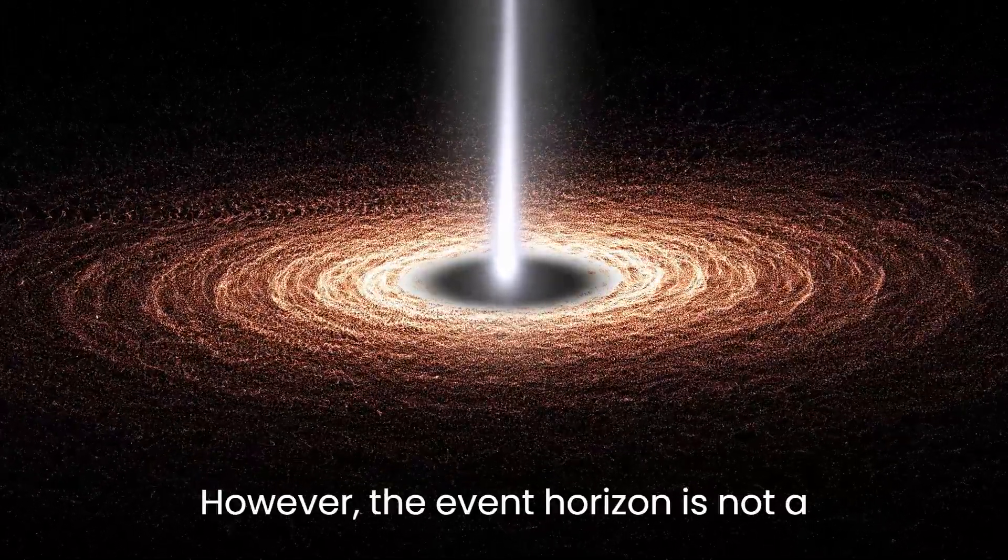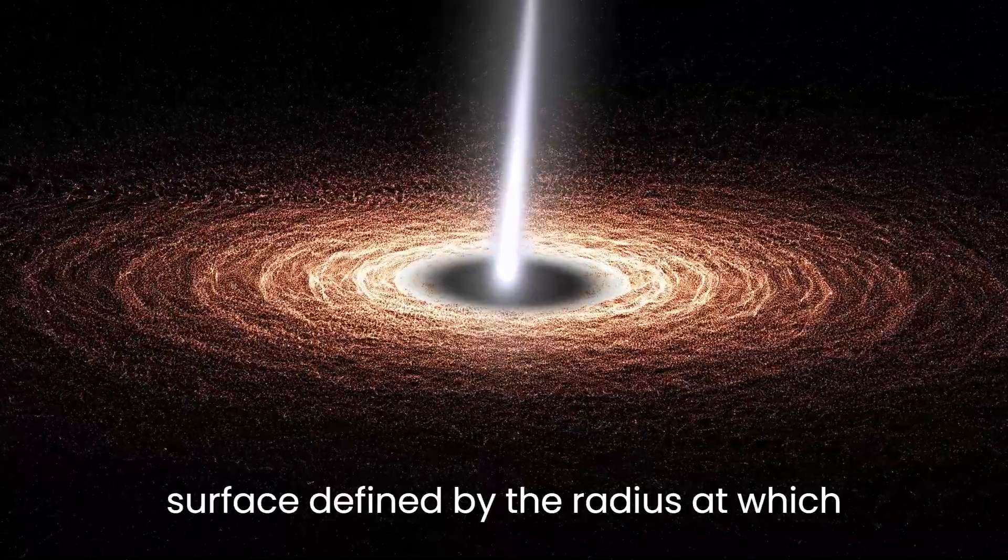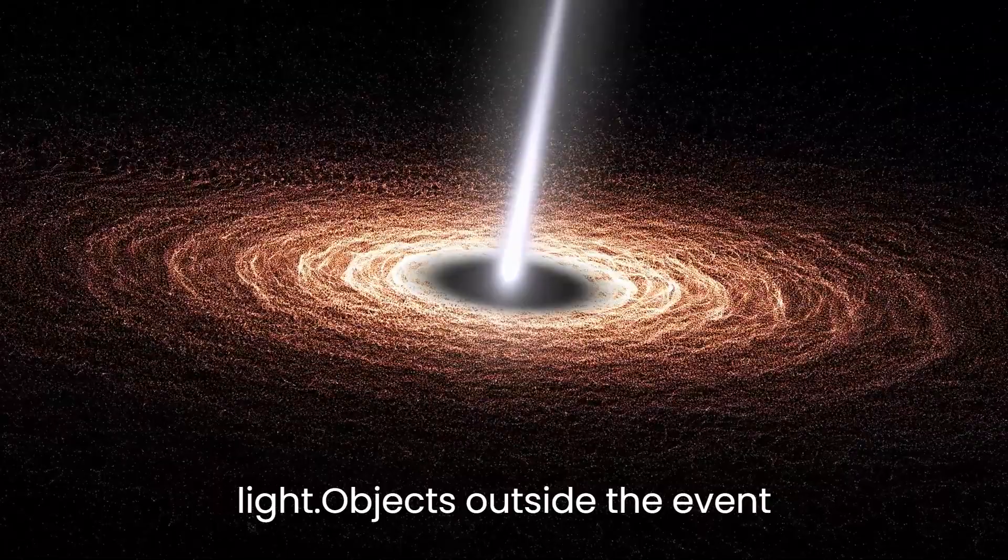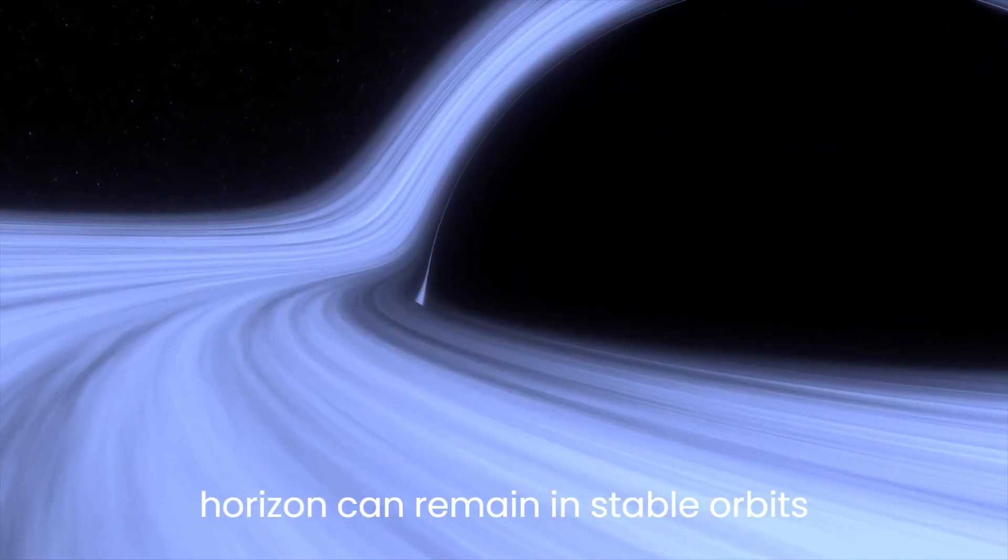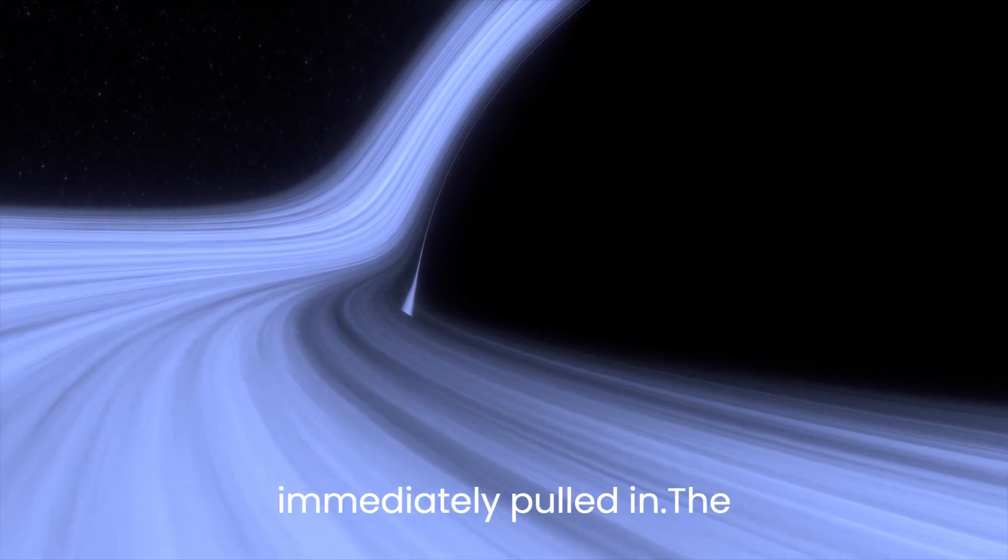However, the event horizon is not a solid barrier; it is a theoretical surface defined by the radius at which the escape velocity exceeds the speed of light. Objects outside the event horizon can remain in stable orbits around the black hole without being immediately pulled in.